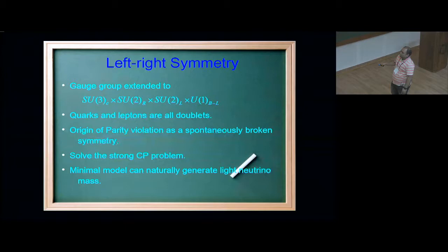Since I have SU2R and SU2L, all my quarks and leptons are now doublets, instead of singular right-handed quarks and leptons as in the standard model. A few features of LR models: it can explain the origin of parity violation as a spontaneously broken symmetry, rather than explicitly broken. Second, it can solve the strong CP problem, and in the minimal scenario we can easily generate light neutrino mass without introducing any heavy fermions into the model.